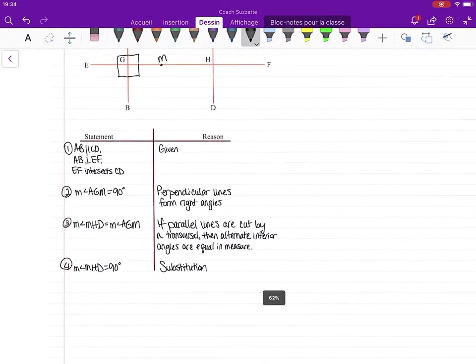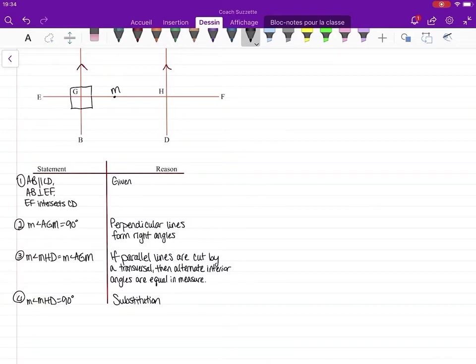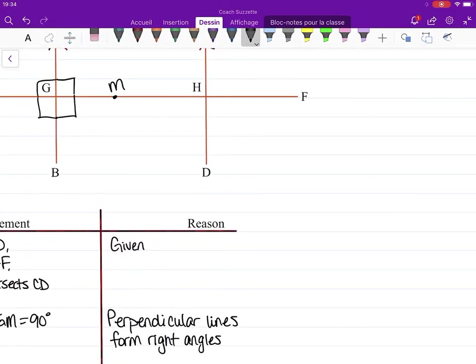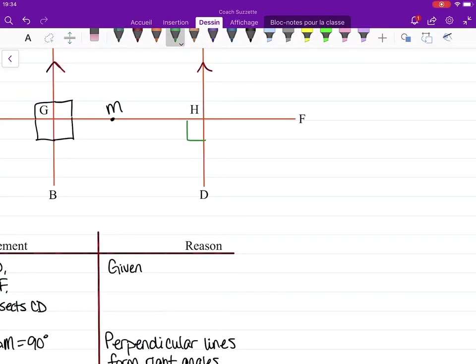Okay, so where does that leave us right now? The measure of angle MHD is 90, so we just said this is 90 because it's an alternate interior angle with this angle.